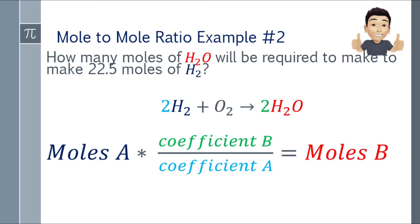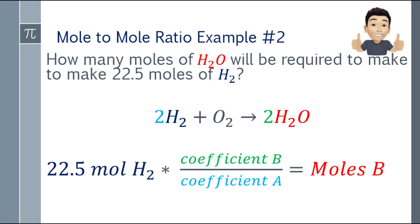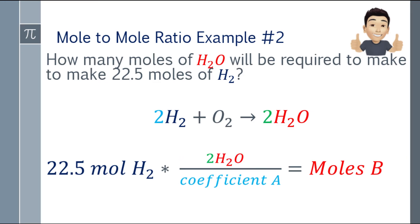I've highlighted coefficient B and coefficient A. For moles A (the given), we have 22.5 moles of H2. Coefficient B is the coefficient of what we're looking for (H2O), which is 2H2O.